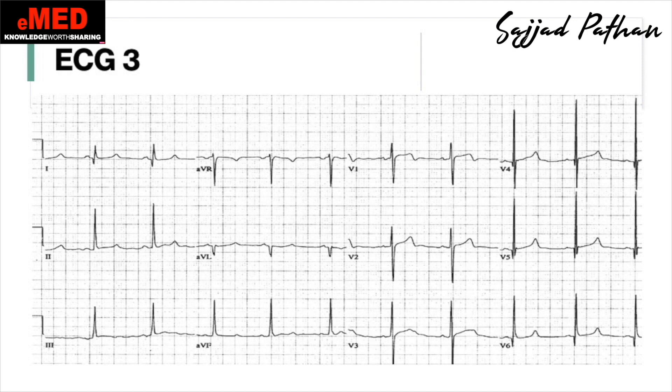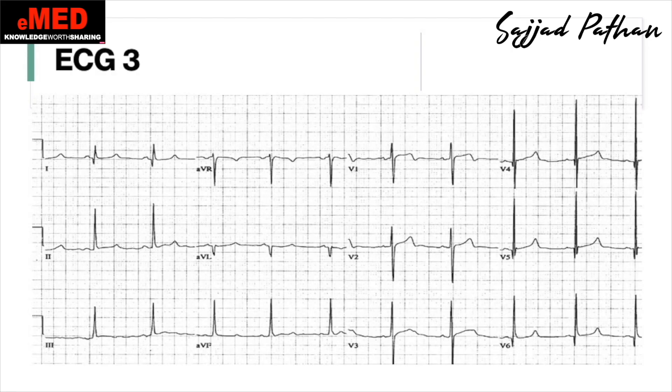Let's look at the third ECG. This is your 14-year-old who is playing soccer or volleyball and suddenly collapses on the field. He regains consciousness and never had anything like that before. There may be a positive family history. The question could be framed as: what historical aspects would you want to know? History of sudden cardiac death. What abnormalities do you see? You see sharp dagger-like Q waves in the lateral leads with associated left ventricular hypertrophy.